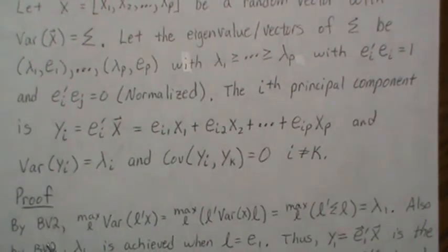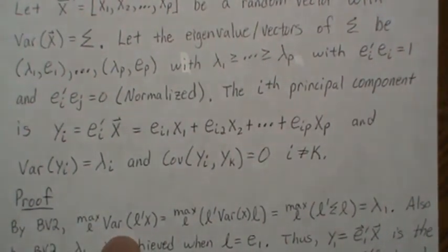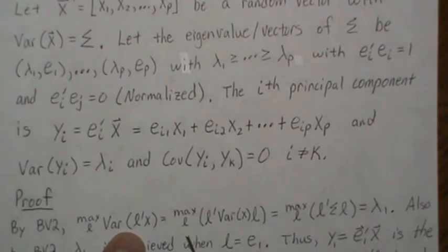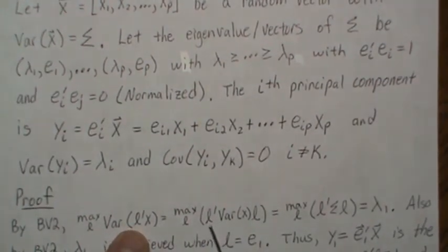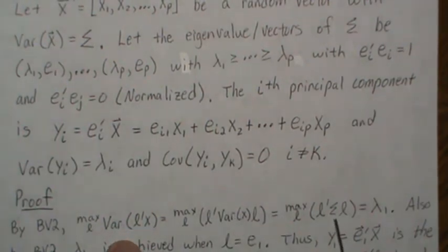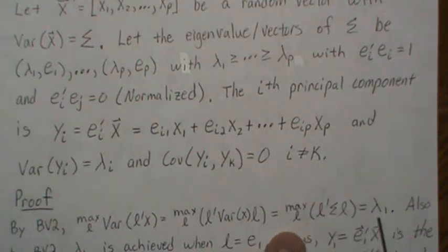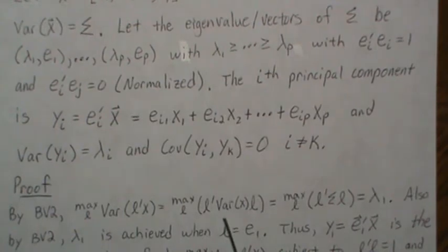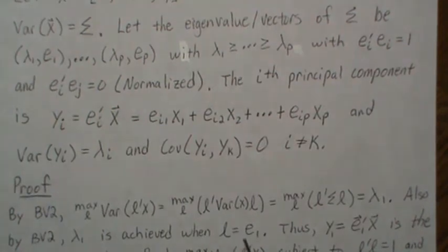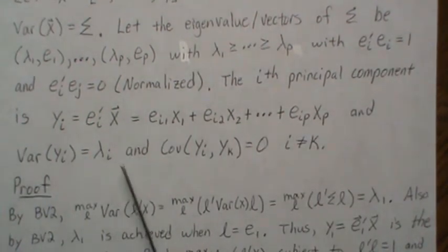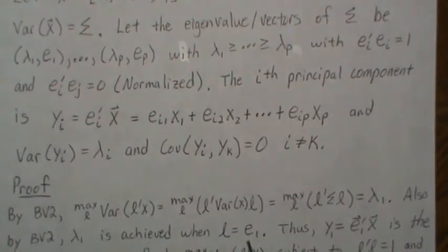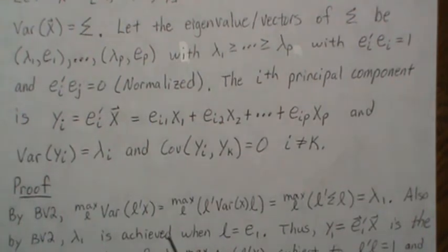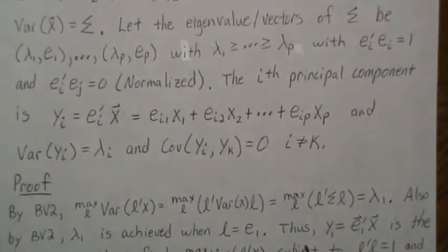The proof works as follows. In BV2 we show that maximizing L'sigma L — which is L' times the variance of X times L — over all L with length 1 yields a maximum of lambda_1, and that lambda_1 is achieved when L is the first eigenvector e_1. This establishes that the first principal component is the eigenvector associated with the largest eigenvalue.